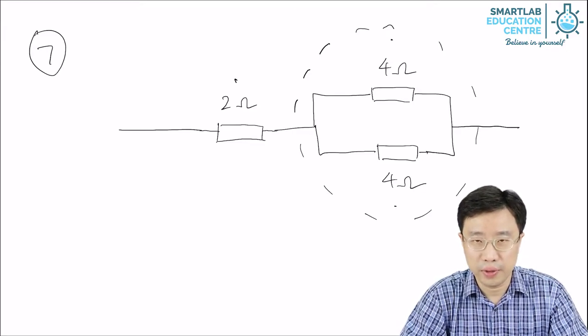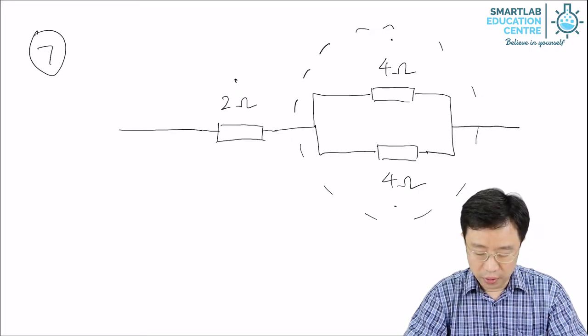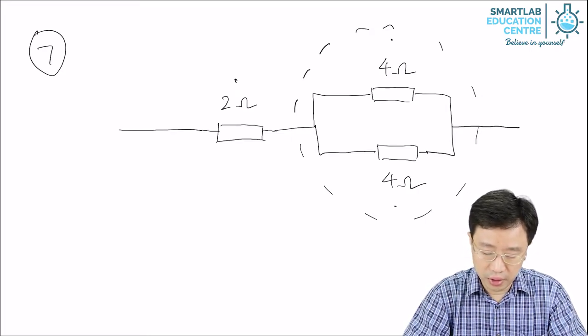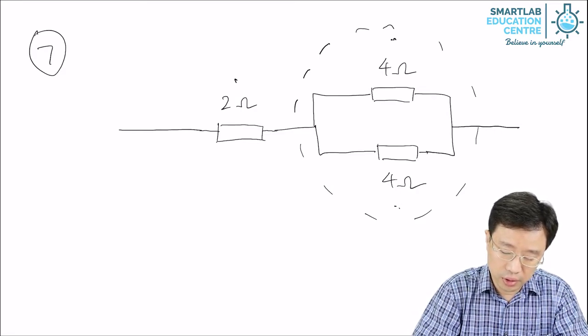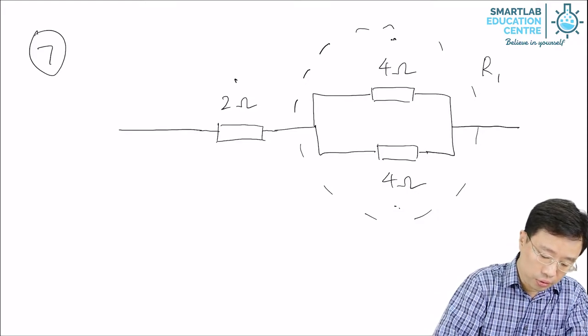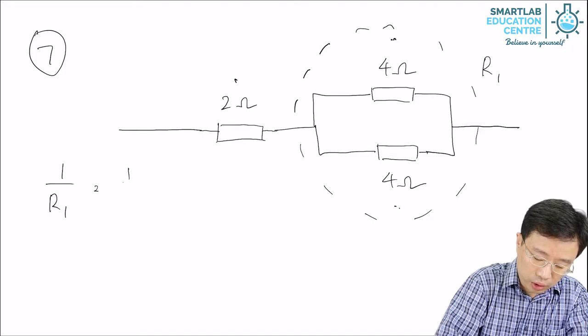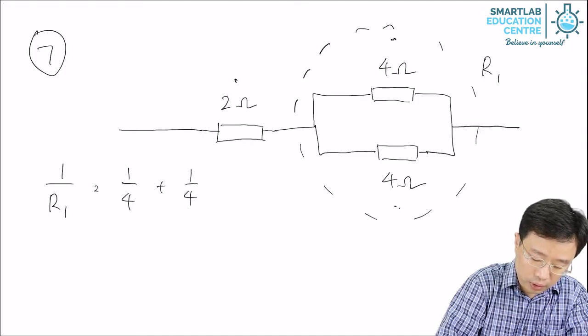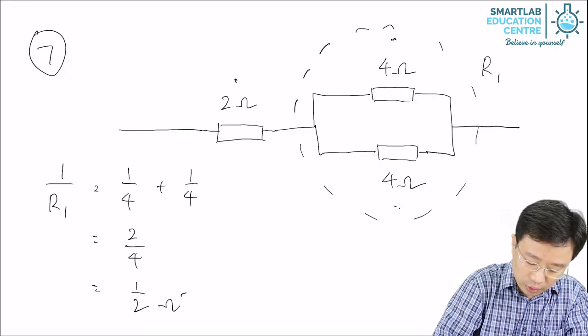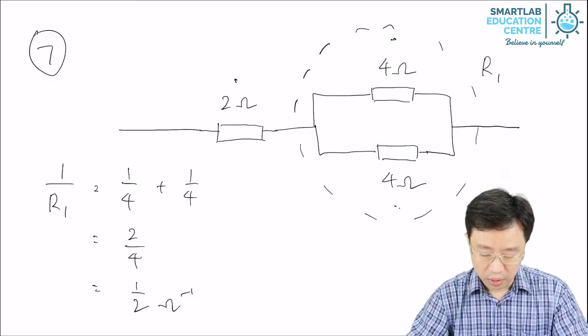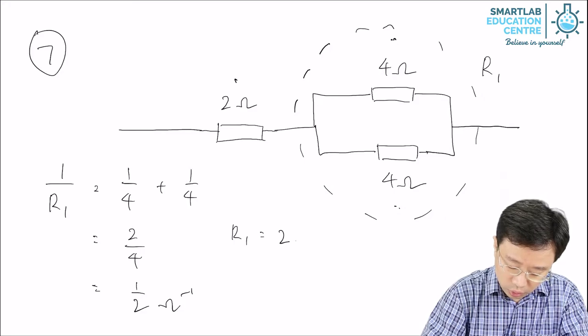So how do you calculate the effective resistance of this arrangement? First, you deal with the resistors in parallel. Let's call the total resistance here R1. So 1 over R1 will be equal to 1 over 4 plus 1 over 4 equals 2 over 4, which is 1/2 per ohm. That means R1 is equal to 2 ohms.